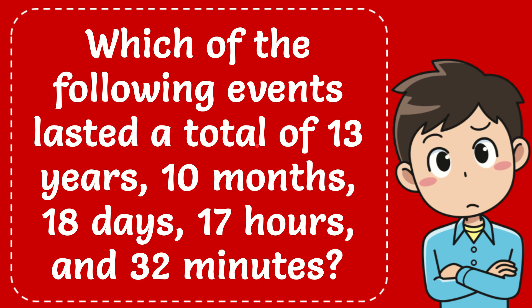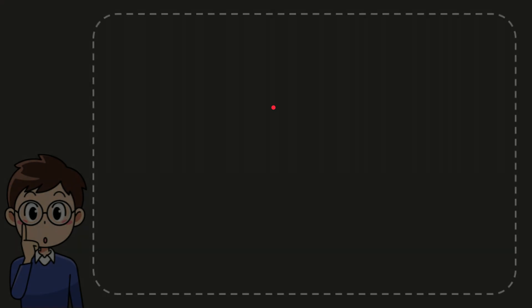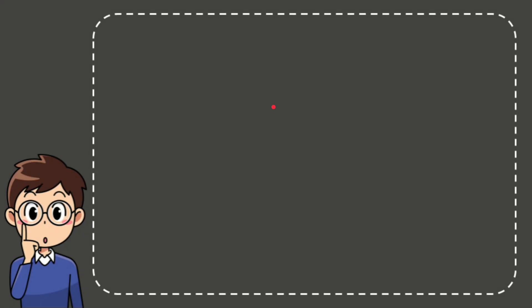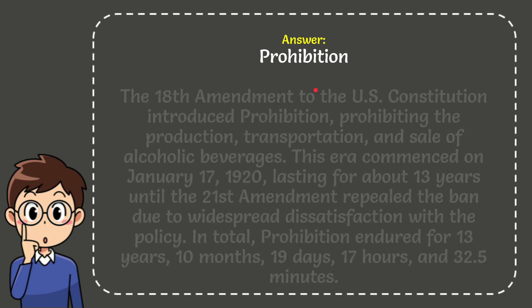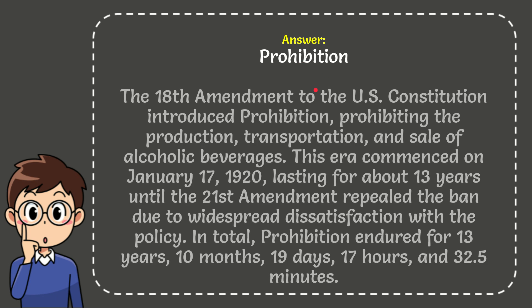What's going on everyone. In today's video I'm going to give you the answer for this question: which of the following events last a total of 13 years, 10 months, 18 days, 17 hours and 32 minutes? When I give you the answer I'll also give you a short explanation. The answer is Prohibition.